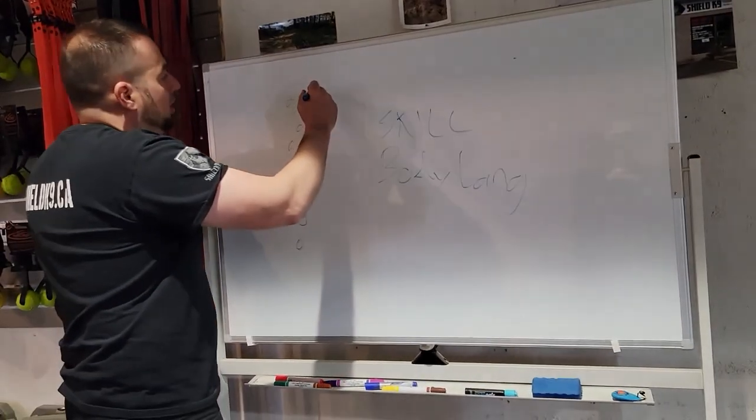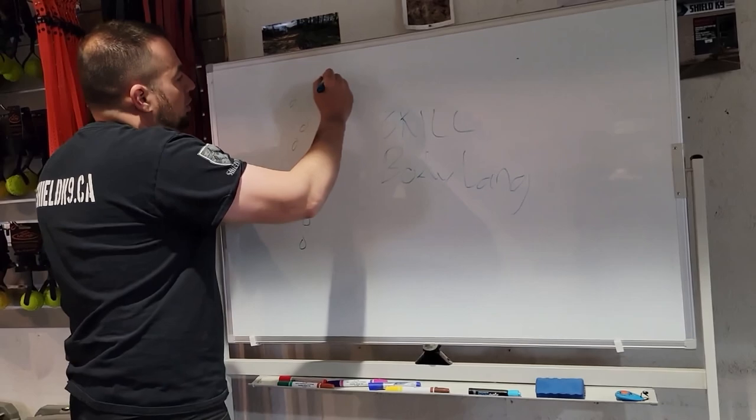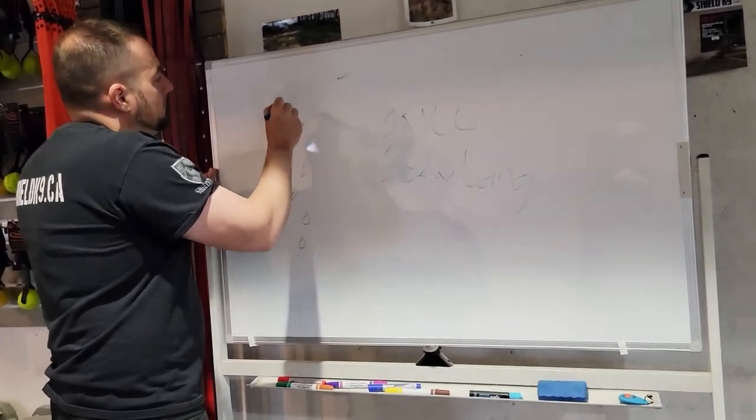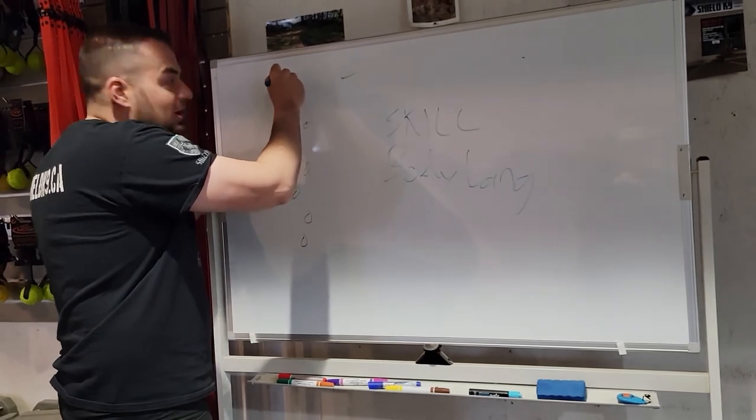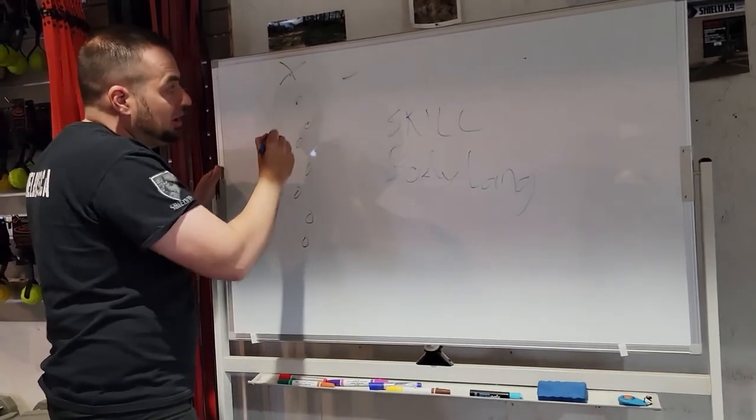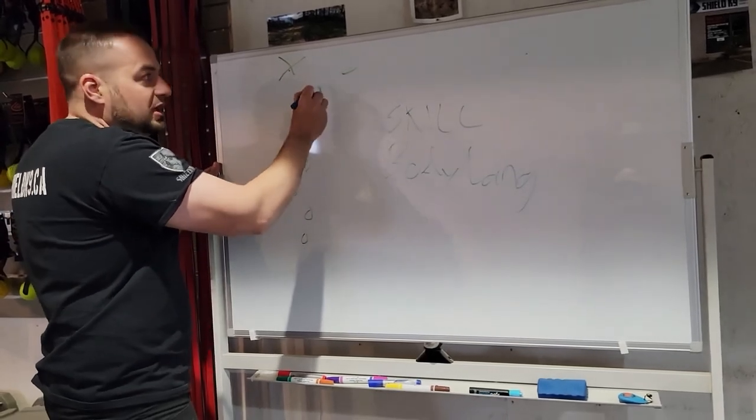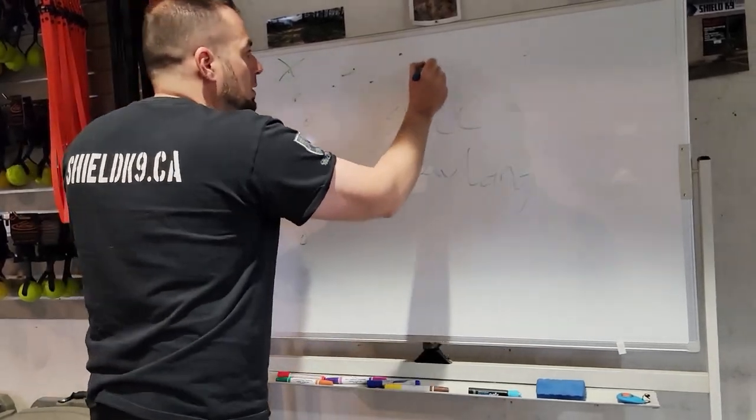When he reaches a corner, especially if the track layer maybe made the corner a little bit with wider steps, he's going to go boom, boom. And he'll check here, but there's no odor here. So what he should do is immediately stop, check to the sides, and say, oh, there it is. And then continue on the track.